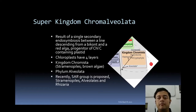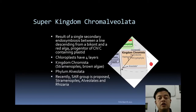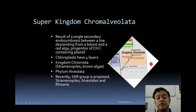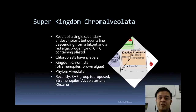Chrome in Latin means color. Chromalveolata is a result of single secondary endosymbiosis between a lineage descending from bicont and a red algae progenitor of the chlorophyll C-containing plastid. The ancestral red algae became food of an ancestral bicont eukaryote — that is how kingdom Chromista came into existence, giving it four membrane-bound chloroplasts.